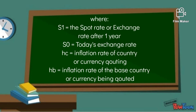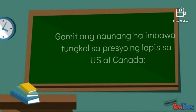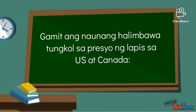Where S1 is the spot rate or exchange rate after 1 year, S0 is today's exchange rate, HC is the inflation rate of a country or currency coating, and HB is the inflation rate of the base country or currency being coated or denominated.